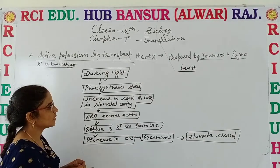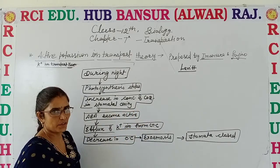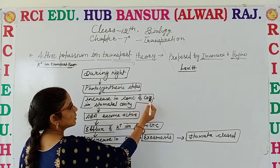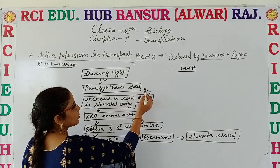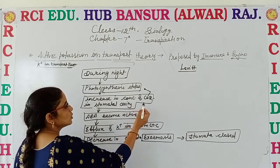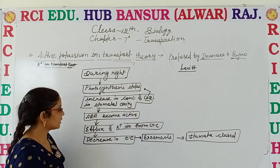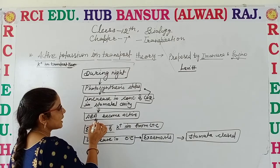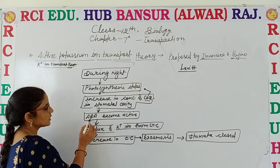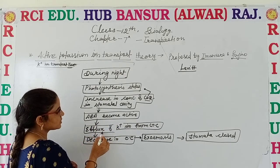During the night time, as we know, the process of photosynthesis is completely stopped. The concentration of CO2 increases in the stomatal cavity. Why does CO2 concentration increase? Because CO2 is utilized during photosynthesis and because there is no photosynthesis, CO2 concentration increases in the stomatal cavity. Due to that, abscisic acid becomes active.